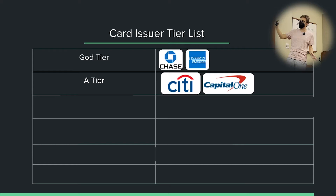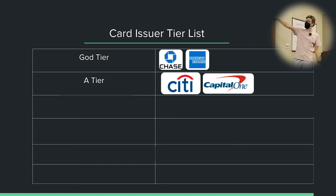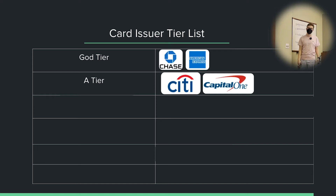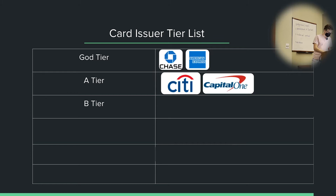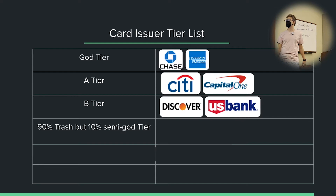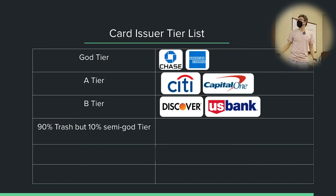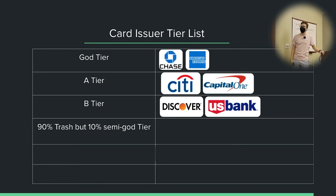In A tier we have Citi and Capital One. They're both good, but nowhere near as good as Chase and Amex. Capital One has recently made some money moves and is going up in terms of quality, while Citi is going down. Citi really hasn't been that competitive in the past few years. Capital One is making hard moves and trying to become a really good issuer. In B tier we have Discover and US Bank — still decent issuers, nothing that special. The only card you'd ever want from Discover is the Discover It. US Bank has some decent cards, but they're so strict on who they approve.